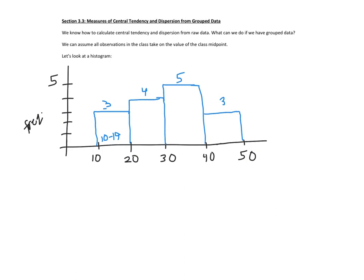All we know is that three observations are between these two numbers. So how can we possibly calculate a mean if we don't know the observations? Because remember for mean we have to add up all the observations. So how we get around this is we assume all observations in the class take on the value of the class midpoint. So the average. So let's do all the class midpoints. So remember it's consecutive lower class limits divided by 2. Add them up divided by 2. So 10 plus 20 over 2.